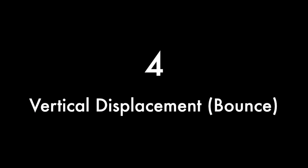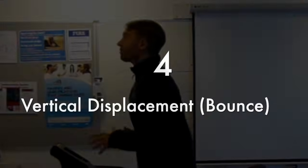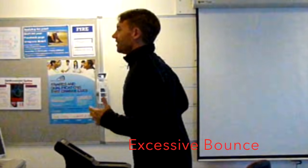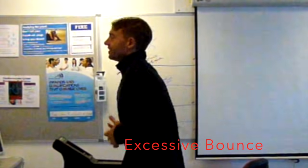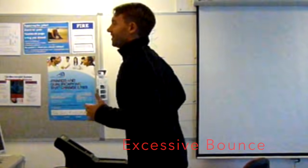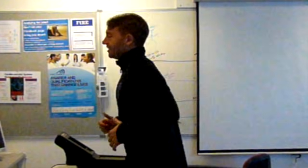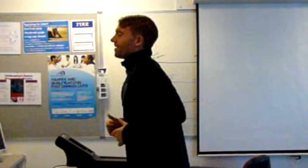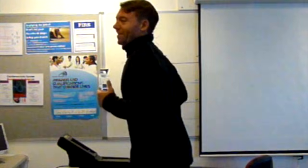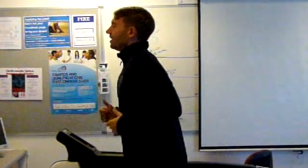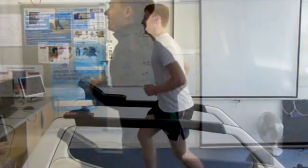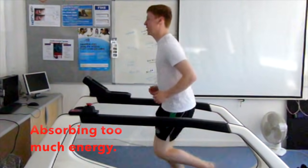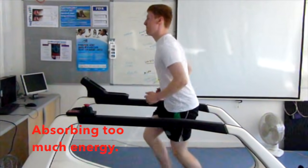Next we will look at vertical displacement. Watch the top of the athlete's head as they run. In this clip we can see excessive vertical displacement using a large amount of energy. Excessive vertical displacement is usually reduced following an increased step rate and a mid-foot strike pattern. Attempting to reduce vertical displacement too much can be very physically demanding for the runner.